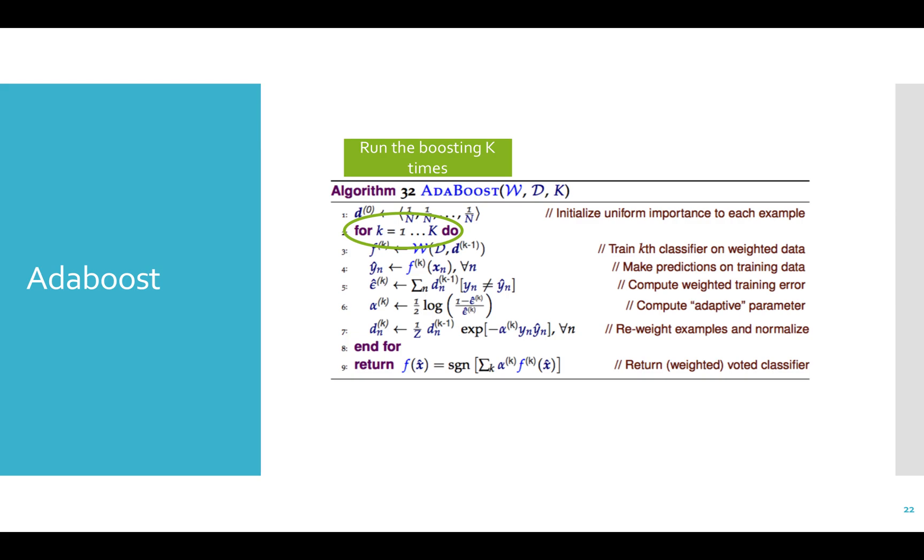Line 2 has our for loop where we're going to run the boosting k times. Line 3, we're training the weak learner w using the data set d and the set of weights, d to the k minus 1. In our first iteration, d to the k minus 1 equals d to the zero. And so all our weights are even.